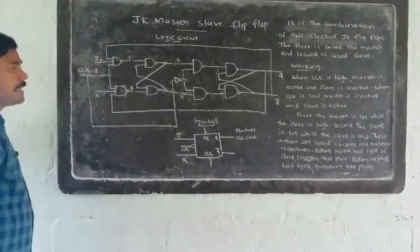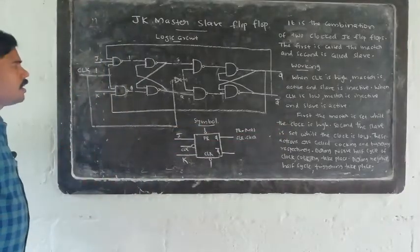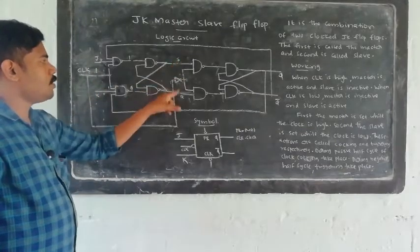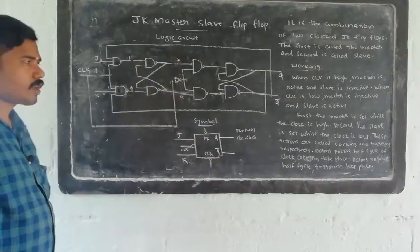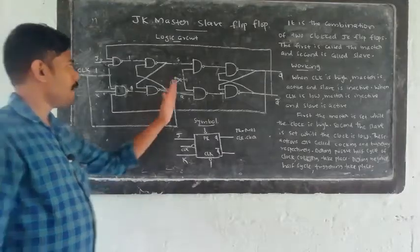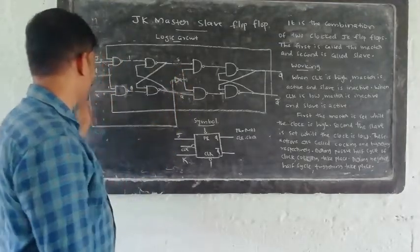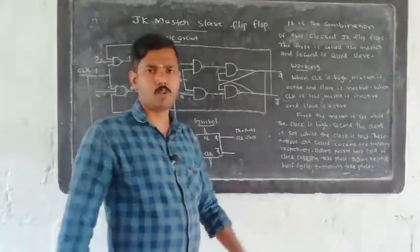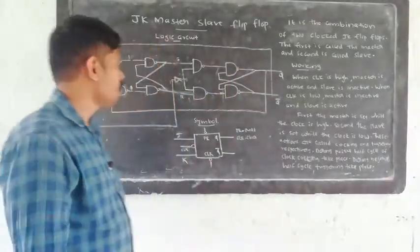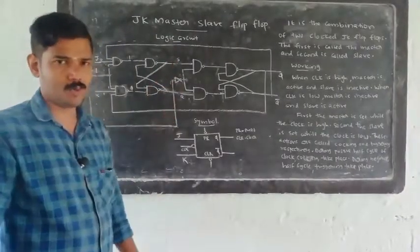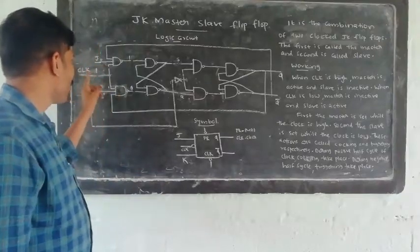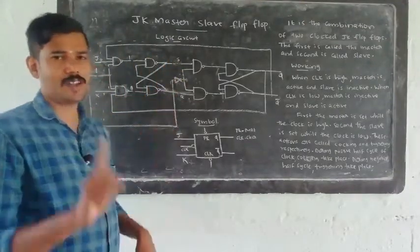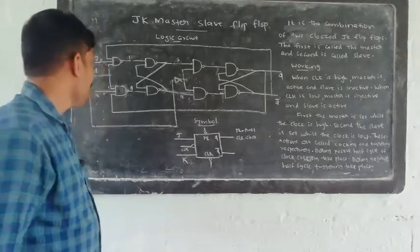When clock is high, master is active and S and R changes. But when clock is high, slave is inactive, so Q and Q-bar remain unchanged at that time. S and R changes, master is set when clock is high. That is the complete cycle of operation.